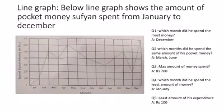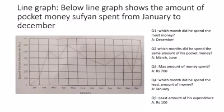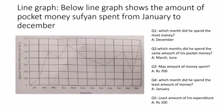The last type is a line graph. This line graph shows the amount of pocket money Sufyan spent from January to December. Question number one: which month did he spend the most money? As you can see, the amount he spent in December is the highest, which is 700 rupees.